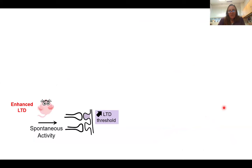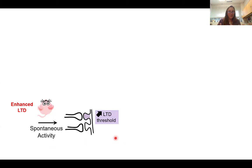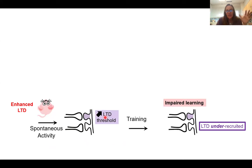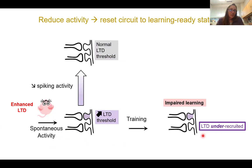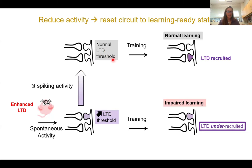These results are consistent with the hypothesis that when you make the threshold too low — too easy to induce LTD — spontaneous activity in the circuit can recruit it with ongoing activity, thereby increasing the threshold for further LTD. There seems to be a balance: having your threshold set just right so that you can learn, but you don't use that mechanism when you shouldn't. If you decrease spiking activity, you can restore the LTD threshold and restore the capacity for LTD-dependent learning.